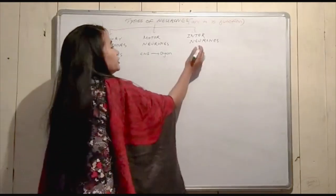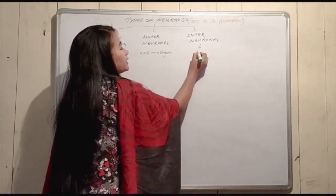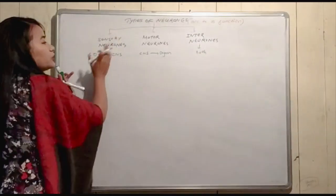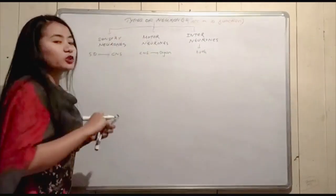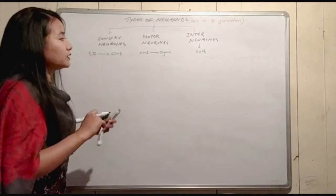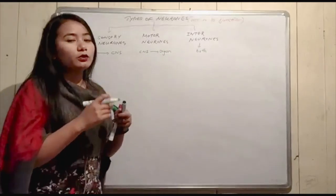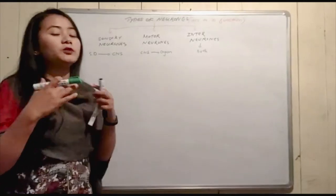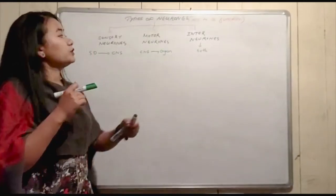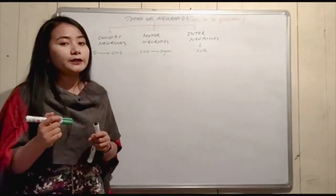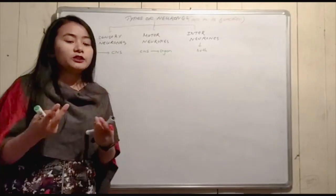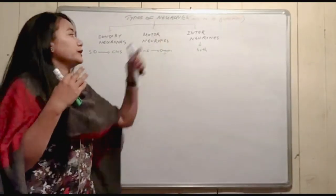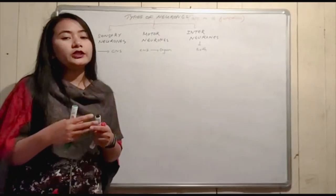So we have the inter-neuron, which connects sensory functions and motor functions. The inter-neuron can also be called a mixed neuron. So the three types of neurons are: first, sensory neuron; second, motor neuron; and third, inter-neuron.